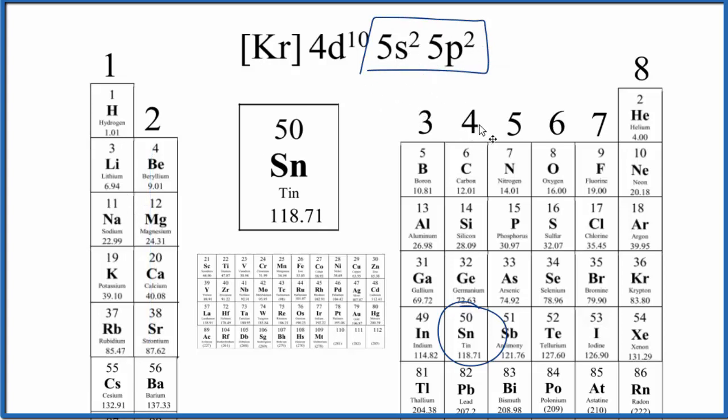But the other reason is that when tin forms ions, it's either going to be a two plus or a four plus. So it'll lose, for the four plus, it would lose these four electrons. For the two plus, it would just lose two valence electrons. So in our experience looking at chemical bonds, tin acts like it has four valence electrons.